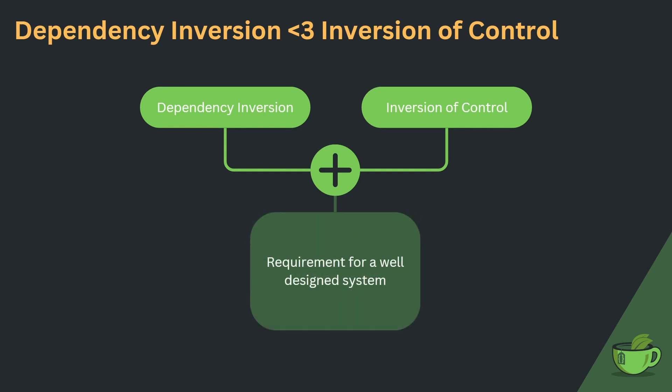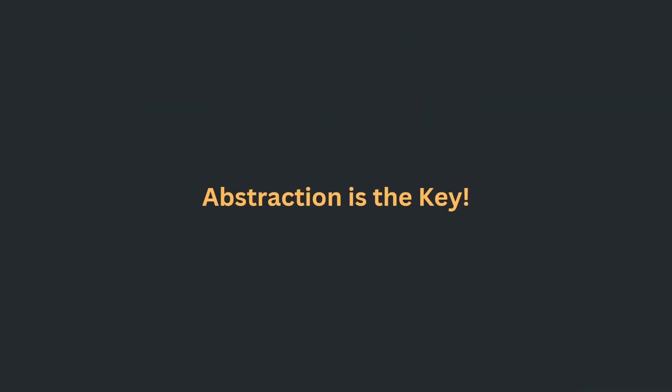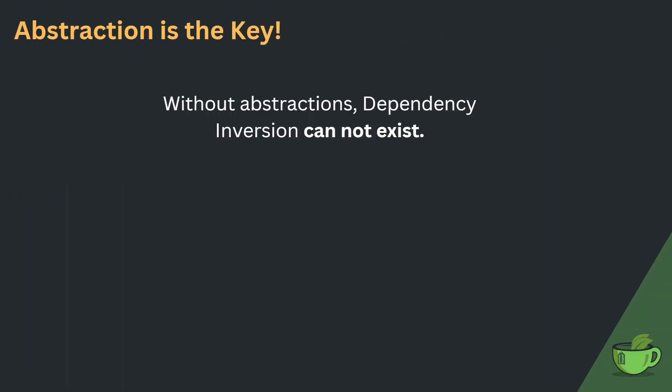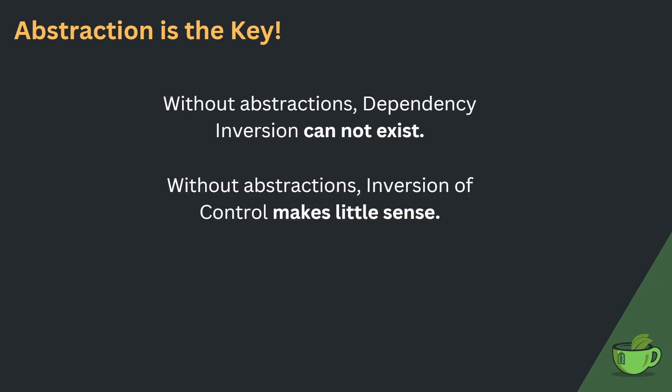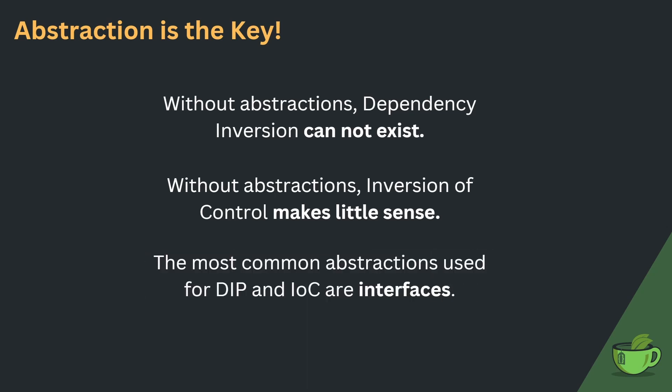Some of these characteristics could also be described as the requirements for a well-designed system. To come full circle: we started this series by talking about interfaces. Abstraction is the absolute key to all of this. Without abstractions, dependency inversion cannot even exist. Without abstractions, inversion of control makes very little sense. The most common abstractions used for dependency inversion and inversion of control are interfaces — that's one of the biggest reasons why you should master interfaces, as they are absolutely ubiquitous in both high-level design principles and concrete design patterns.